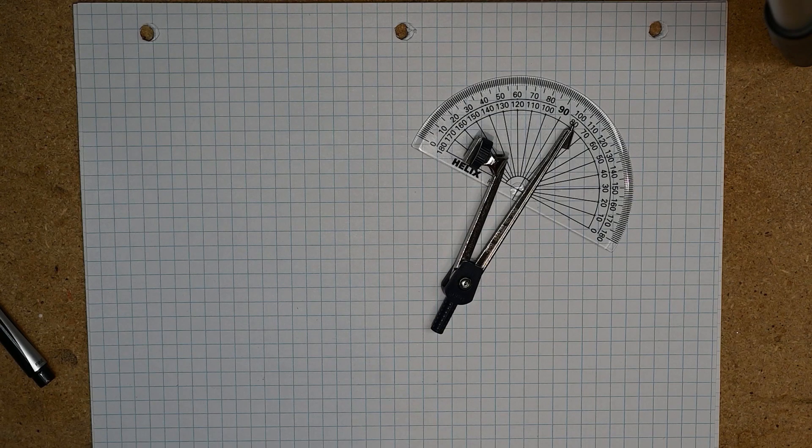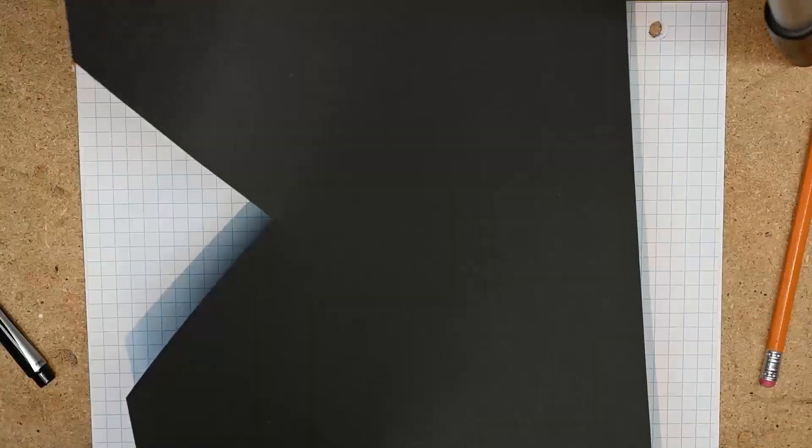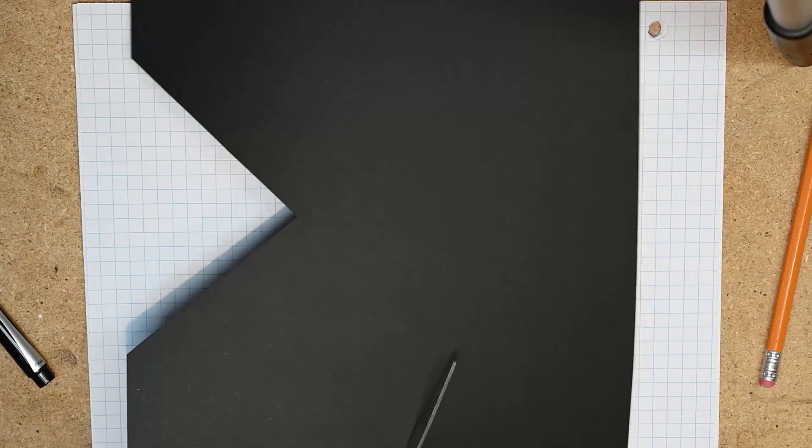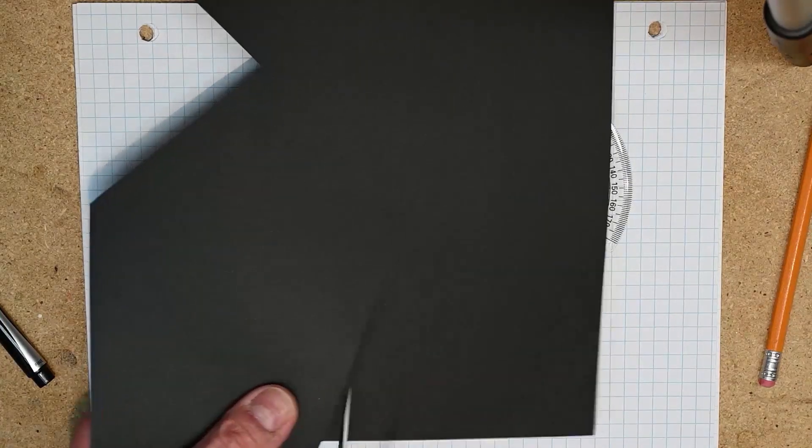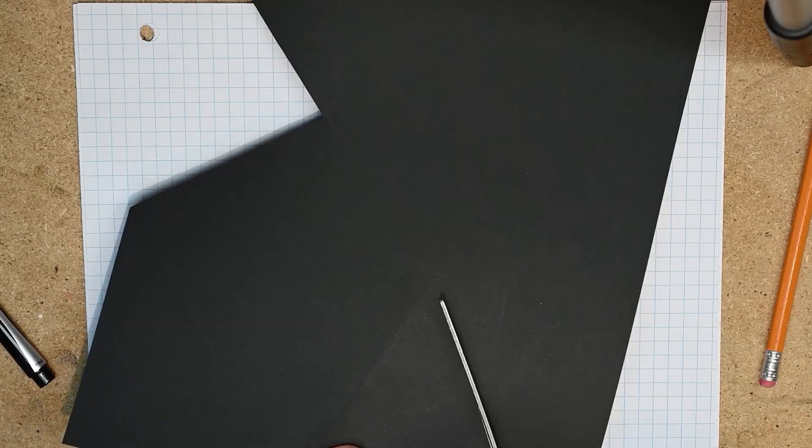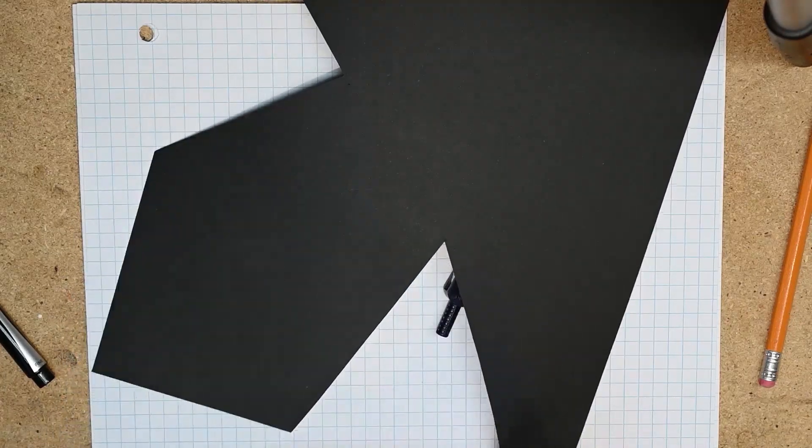To get it started I'm going to take some cardstock paper and I'm just going to cut out a triangle. It can be really a triangle of any shape, but let's just come up with something here fairly randomly done. Here's a triangle.